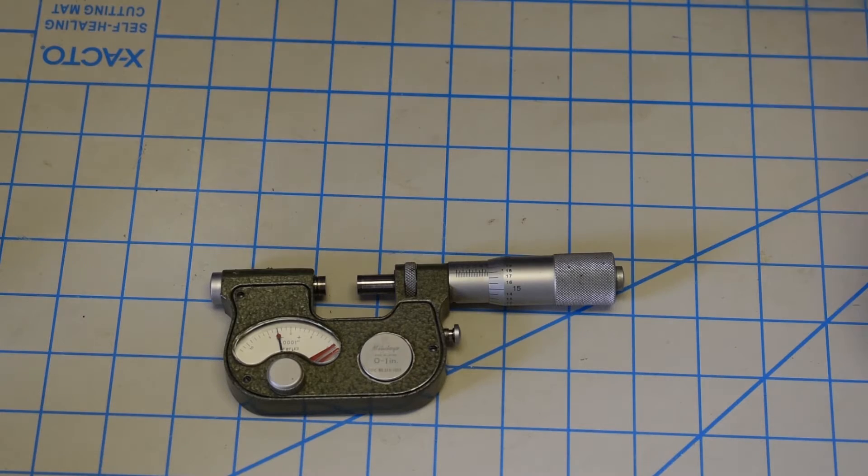Hey guys, welcome to the workshop. Today we have a Mitutoyo 510-105A indicating micrometer. We are going to go ahead and take this apart, clean it, get familiar with its operation, and maybe we could share a couple of hints and tips on its use.